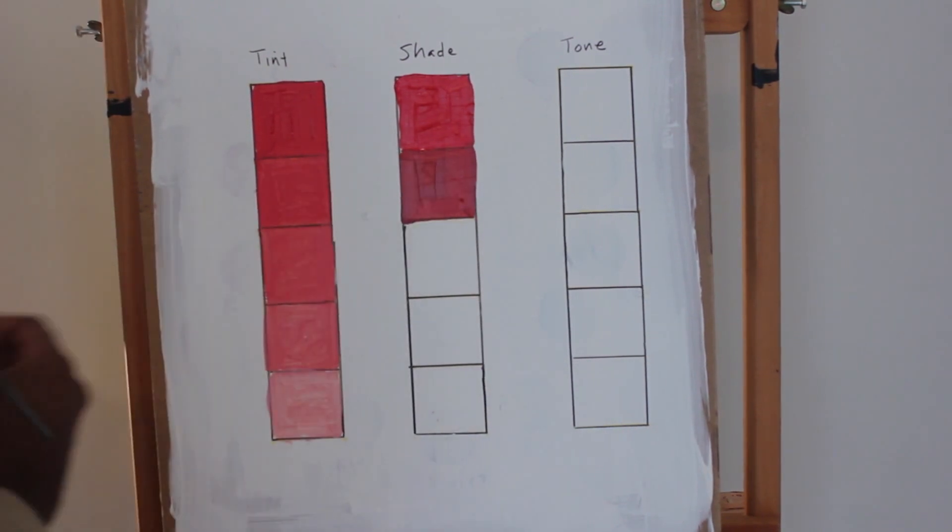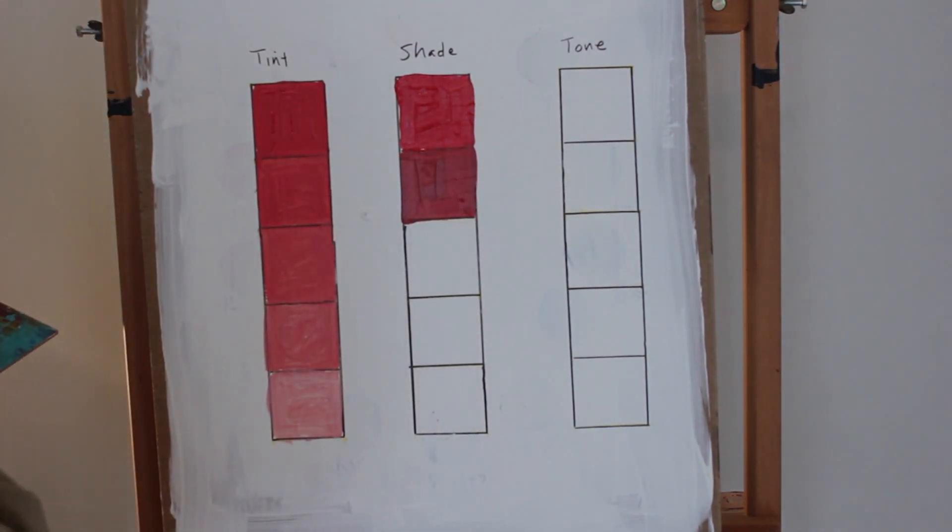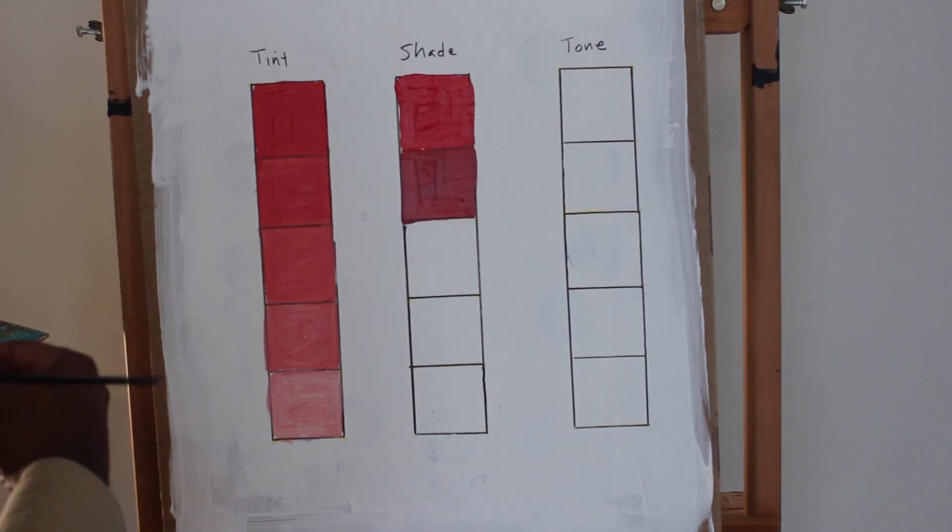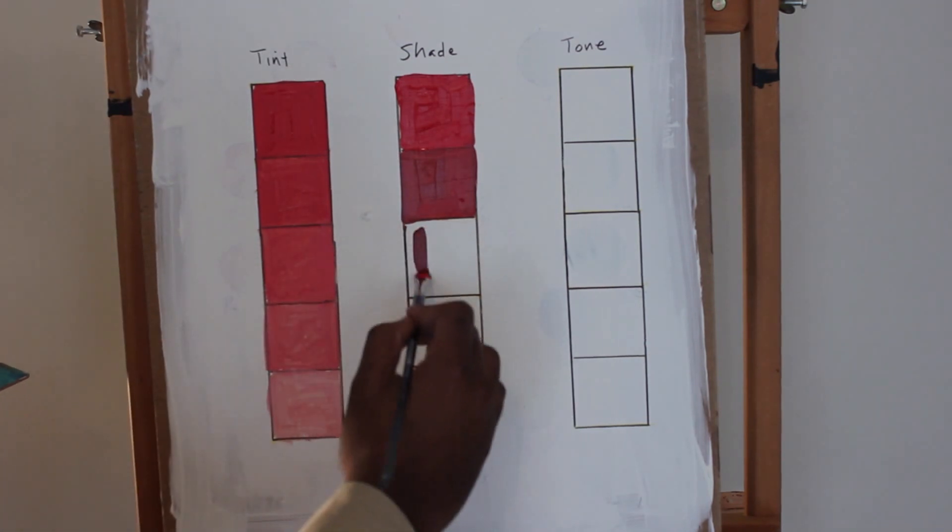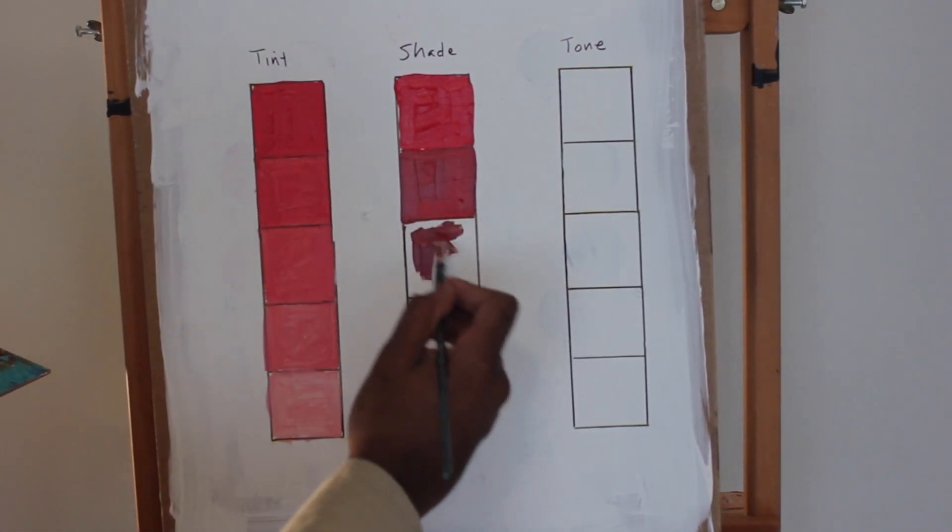On the first lesson, we talked about the color wheel, how to get those primary, secondary, and intermediate colors. On this one, I just want to get you to see what you can do with just one color. You add black to get a shade—black to a color to get a shade.